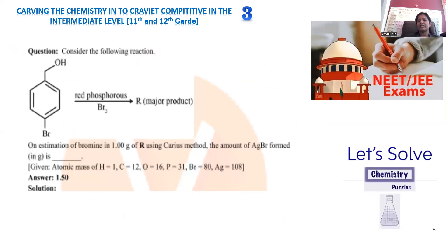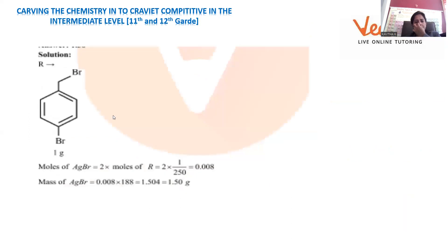Question number three is collected from JEE Advanced 2022. This is part of organic chemistry. The compound is an aromatic benzene ring containing bromo at the para position with a CH2OH group — parabromobenzyl alcohol. When treated with red phosphorus and bromine, in the presence of phosphorus, the bromine substitutes the OH, converting it into a dibromo compound. Compound R will have the existing parabromo plus a new bromo generated at the side chain.